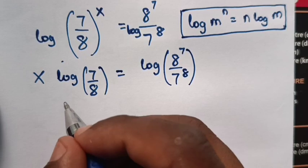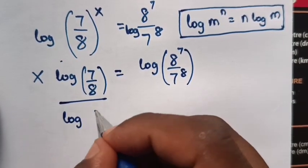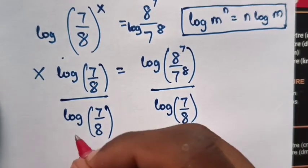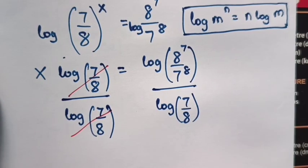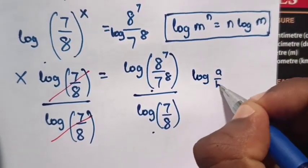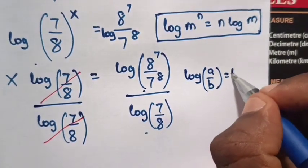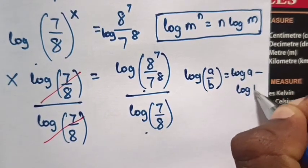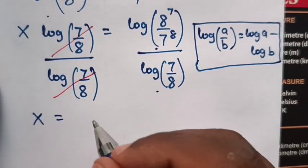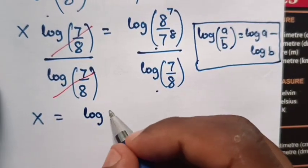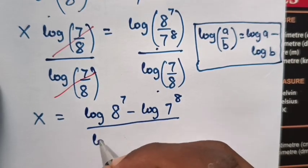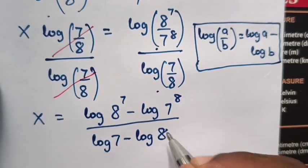Next step, we divide by log (7 over 8) in both sides. Then log (7 over 8) will cancel with each other. Therefore, we apply the logarithmic rule that log a over log b equals log a minus log b. Therefore, the value of x in our equation will be equal to log (8 power 7) minus log (7 power 8), over log 7 minus log 8.